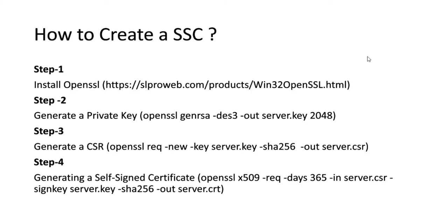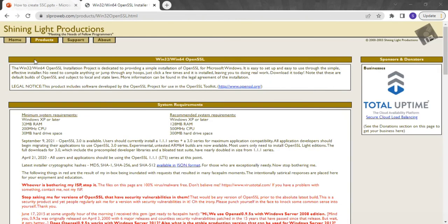To create a self-signed certificate, we need to follow four steps. First, install OpenSSL — a utility we need to install. Second, create a private key. Third, generate a CSR file. Fourth, using the CSR file, generate a self-signed certificate. We will see a demo of this.